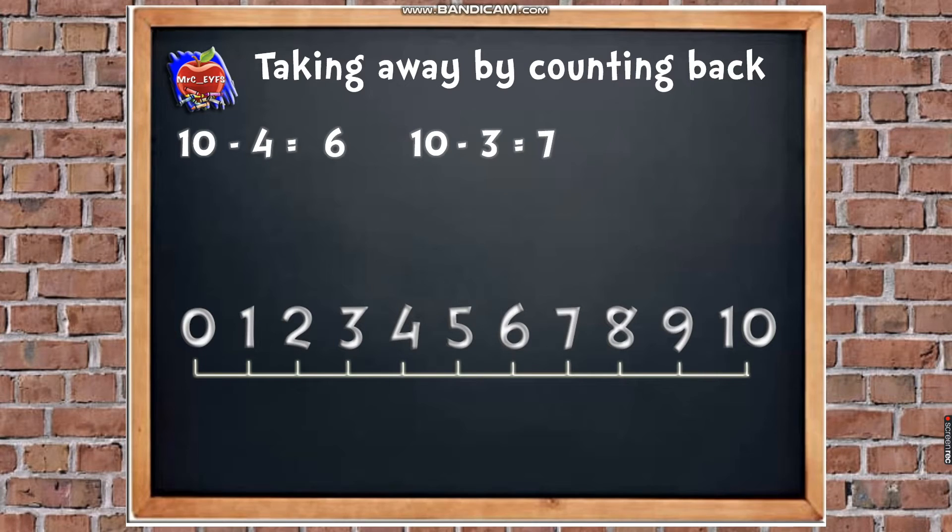This last one, I want you to do, and I want you to tell me what you get. So let's start on 10. I'm going to roll the dice. Are you ready? So how many have we got? So what would our number sentence say? Yeah, so 10, take away 5, equals.